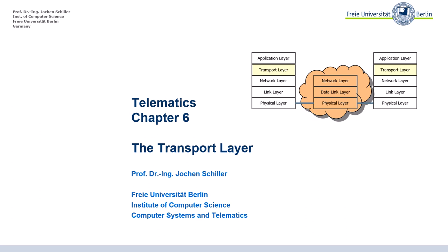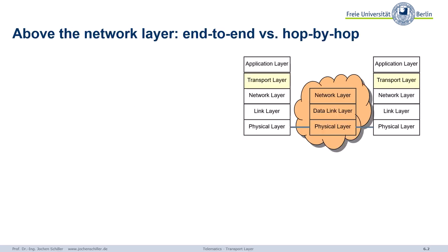Welcome to chapter 6, the transport layer. Finally we made it. Now we are above the network layer and talking about end-to-end communication. What does this mean, end-to-end communication?